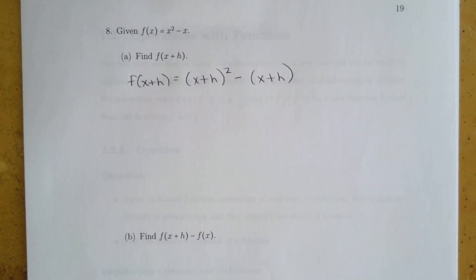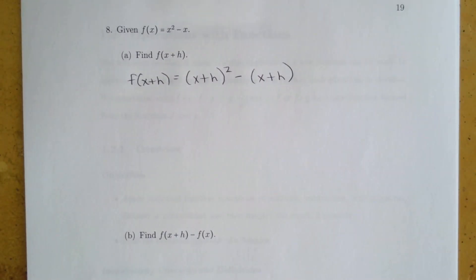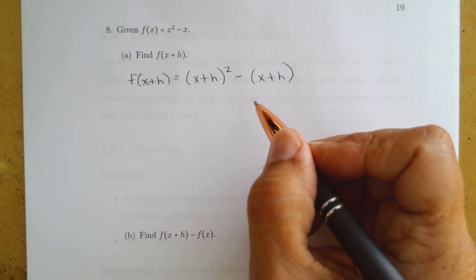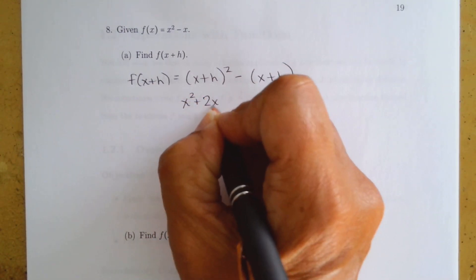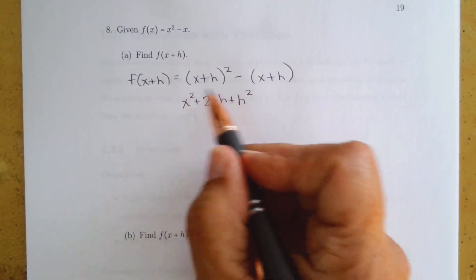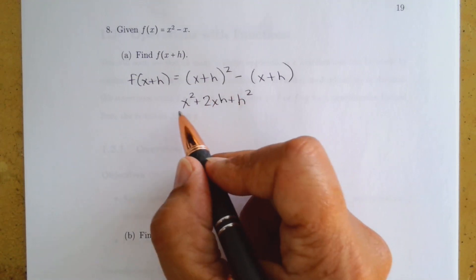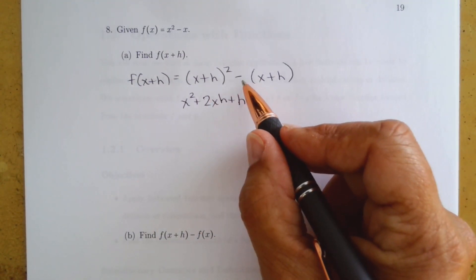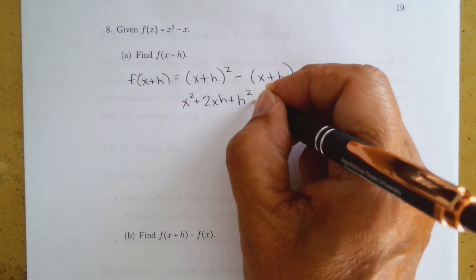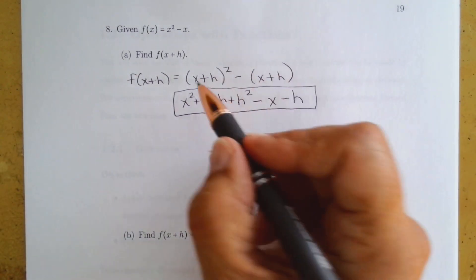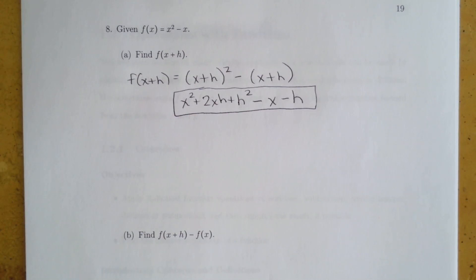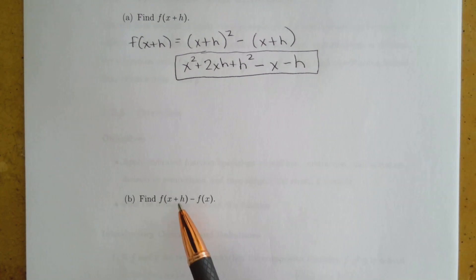Remember when you have a minus sign before more than one term, put those in parentheses so you don't forget to change all the signs. We already know (x plus h) squared is x² plus 2xh plus h². Then we subtract (x plus h), changing signs: minus x minus h. There are no like terms to combine, so f of x plus h equals x² + 2xh + h² − x − h.